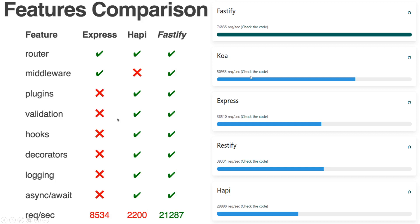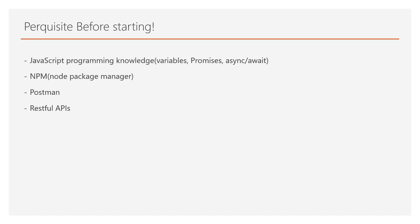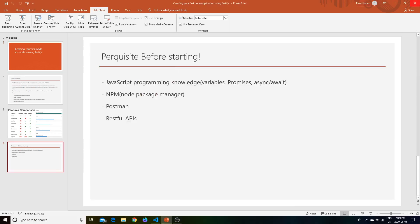Before we start, here are some prerequisites for following along. JavaScript programming knowledge — knowing your variables, promises, and async/await — is very useful. Node Package Manager (npm) is needed because we'll be downloading and using different packages including Fastify. We'll also be using Postman to send requests, and a basic understanding of RESTful APIs is helpful.